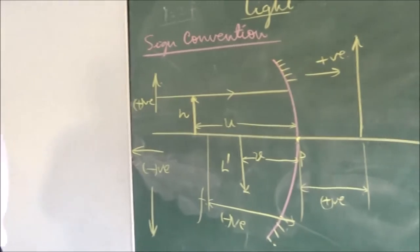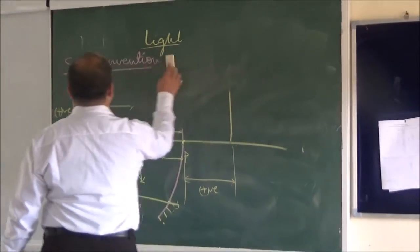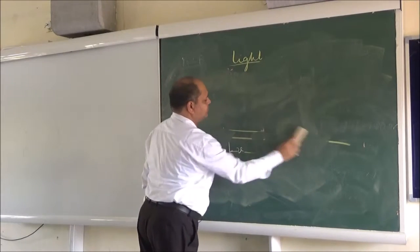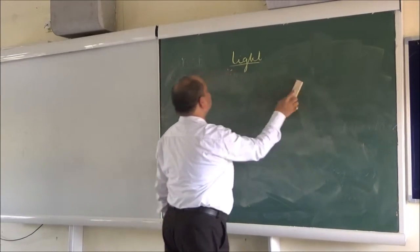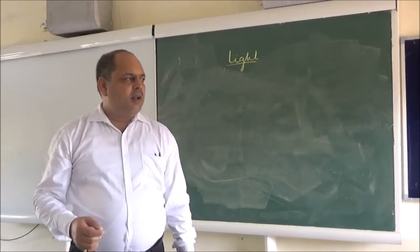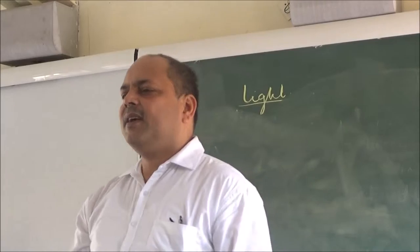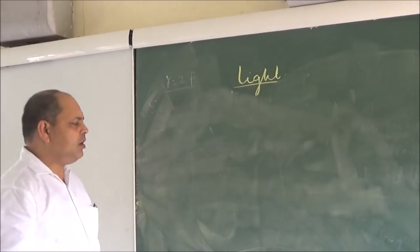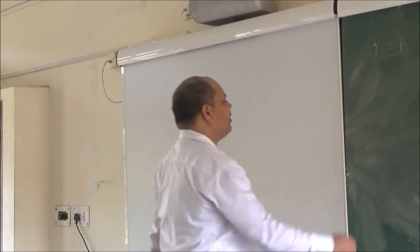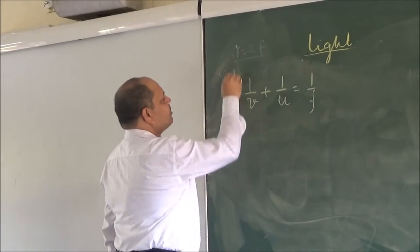So we have got the Mirror Formula. Out of U, V, and F, if any two things are known, the third can be calculated. The formula which relates all three together is known as the Mirror Formula: 1/V + 1/U = 1/F.